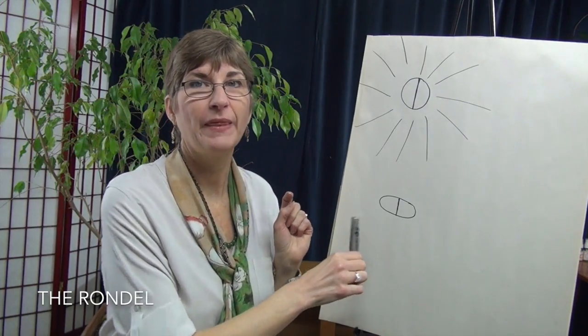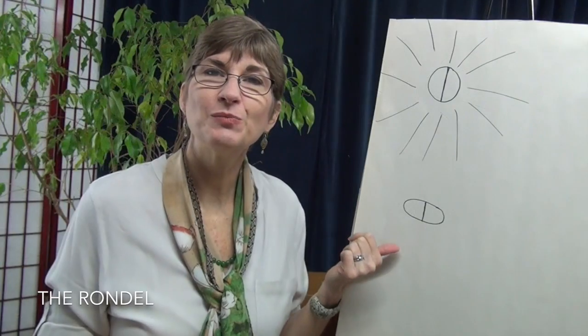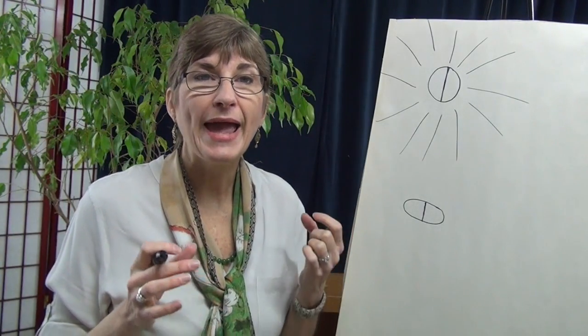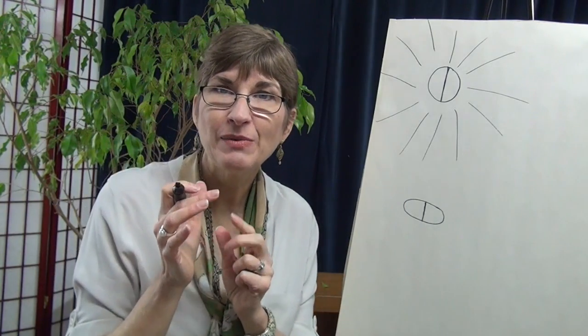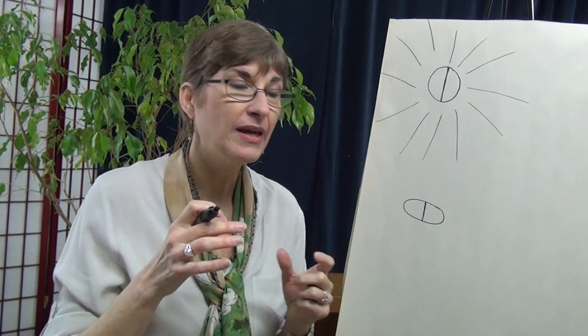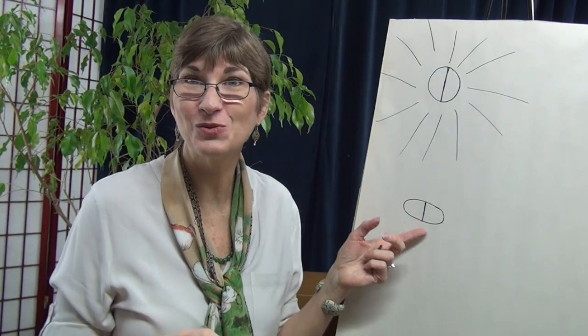This is called a rondelle shape. Basically it's a sphere that's a little flattened. Rondelles are particularly found in the more precious gemstones and for very good reason, because a rondelle maximizes how much gemstone you can get out of the crystal and so it keeps the cost down and it's also the most efficient use of the original source crystal.